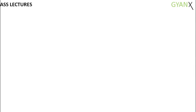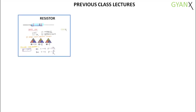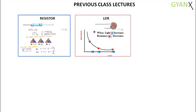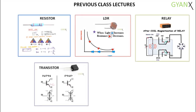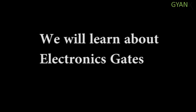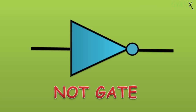In one of the sessions, we have already covered the basics of components like resistor, LDR, relay, transistor, and IC7805. In today's class, we'll be learning about electronic gates, especially the NOT gate.